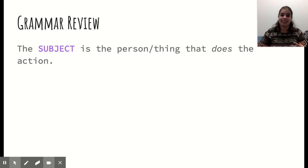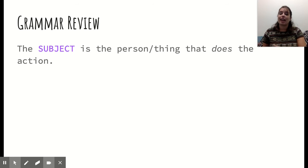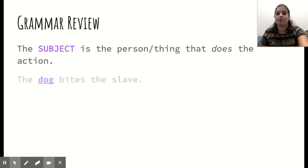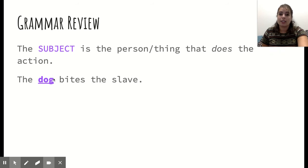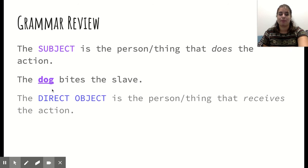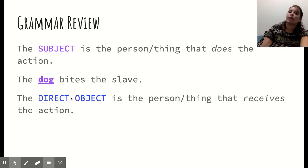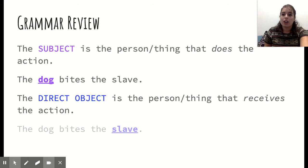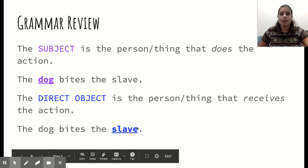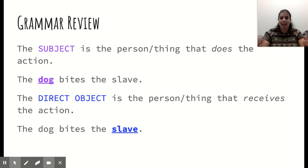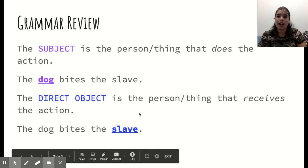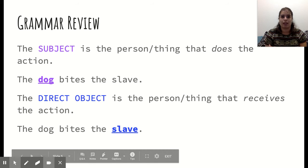To review: the subject of the sentence is the person or thing that does the action. For example, in 'the dog bites the slave,' the dog is the one doing the action of biting — so dog is our subject. The direct object is the person or thing that receives the action. In 'the dog bites the slave,' the slave is the person or thing being bitten. The action is affecting the direct object — in this case, the slave.